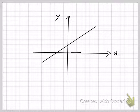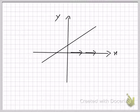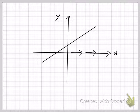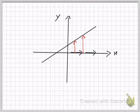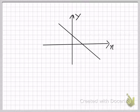A line like this will have a positive slope. The positive x-axis will be your reference line. I want you to drive towards the positive x-axis, and as you do, you will realize that your line is rising. So a positive change in X is causing a positive change in Y, therefore your slope will be positive.